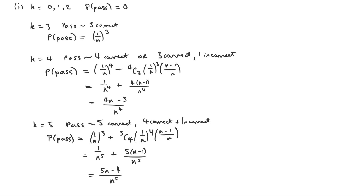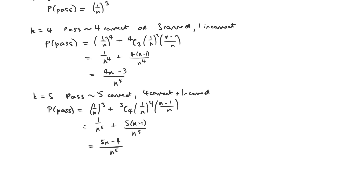Okay, so we've worked out all these probabilities and we want to show that the best option is K equals four. You could make an informal argument: four is clearly better than three because the only way of passing with three is all three correct, whereas with four I can pass with three out of four correct — it's clearly easier. Similarly four is arguably better than five because it's easier to get four out of four than five out of five, and easier to get three out of four than four out of five.